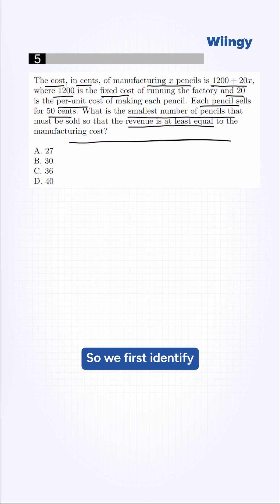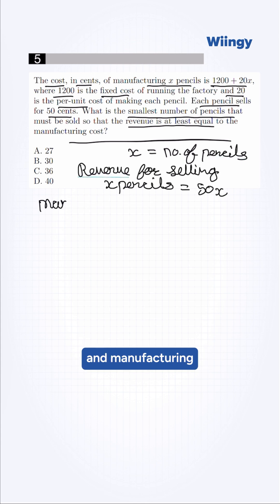We first identify the expression from the given text for cost and revenue. Let X represent the number of pencils. Here, the revenue for selling X pencils is 50X, and the manufacturing cost is 1,200 plus 20X.